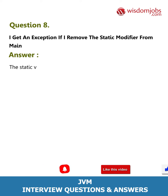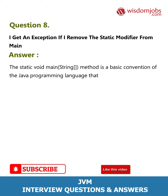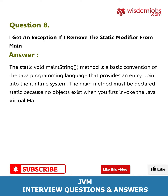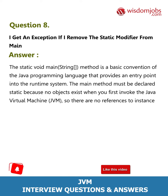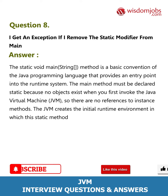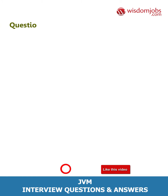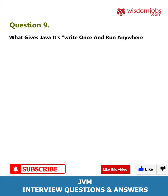Question 8: I get an exception if I remove the static modifier from main. Answer: The static void main String method is a basic convention of the Java programming language that provides an entry point into the runtime system. The main method must be declared static because no objects exist when you first invoke the JVM, so there are no references to instance methods. The JVM creates the initial runtime environment in which this static method can be called. If you remove the static modifier, it will throw a NoSuchMethodException.